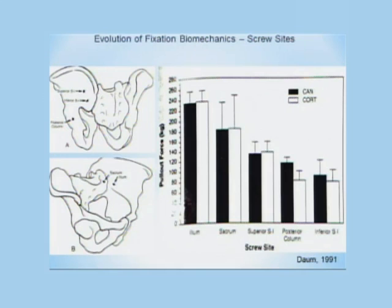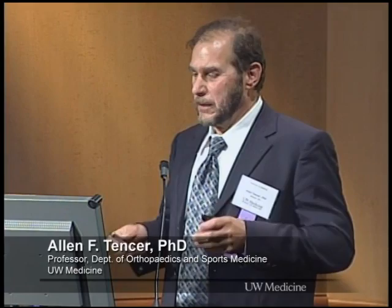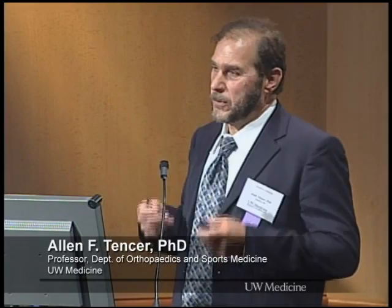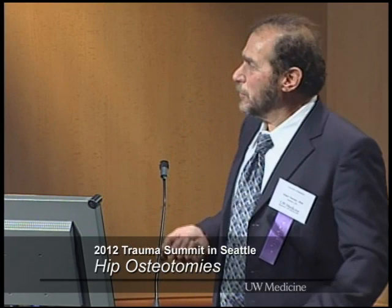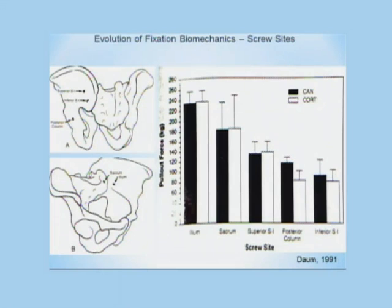These are done in a laboratory, so they are not considering all the other important patient considerations. Typically, these are specimens loaded supported in the femurs and loaded through the spine at L4, producing compression and flexion in the pelvis. I want to show some results of screw sites, because you sometimes have the requirement to put screws in various places in the pelvis. This is the pull-out strength in kilograms across different sites — the inferior SI has the lowest pull-out strength.